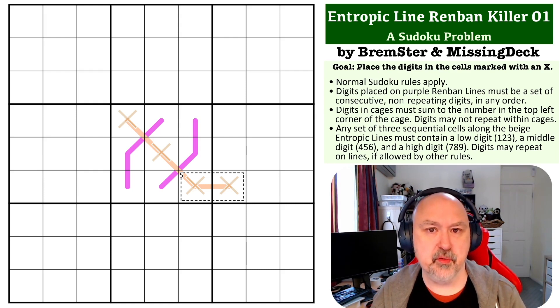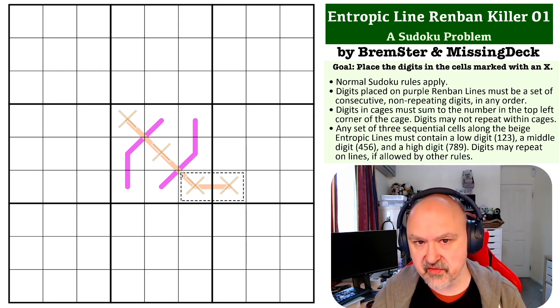Digits placed on the purple Renban lines must form a set of consecutive non-repeating digits in any order, and the digits placed in the cage must sum to the number in the top left corner of the cage.